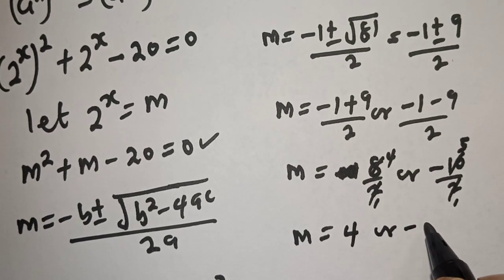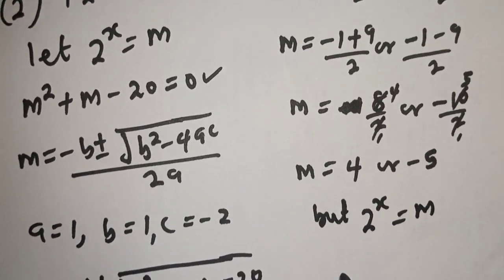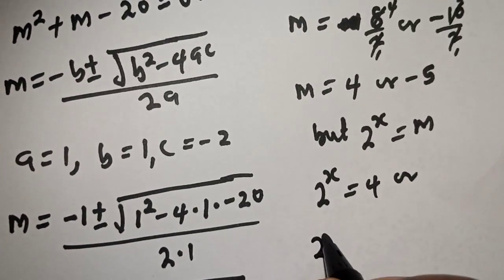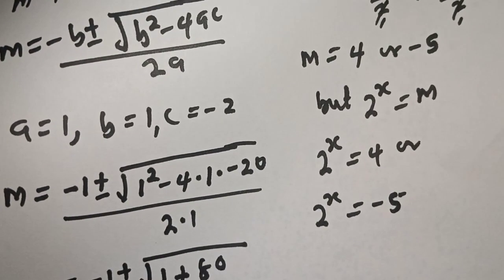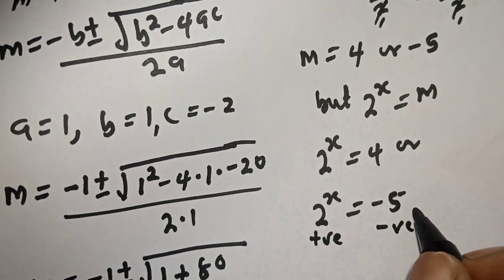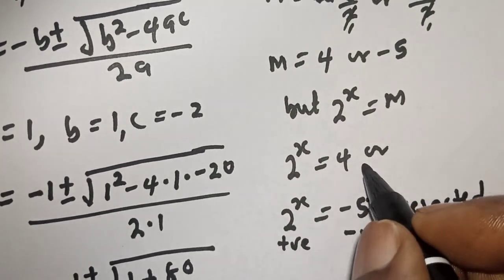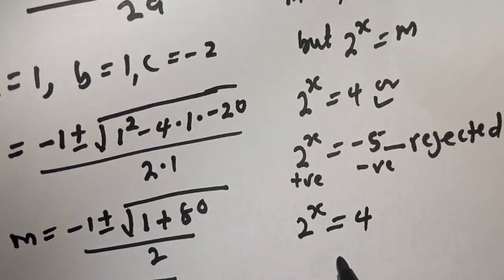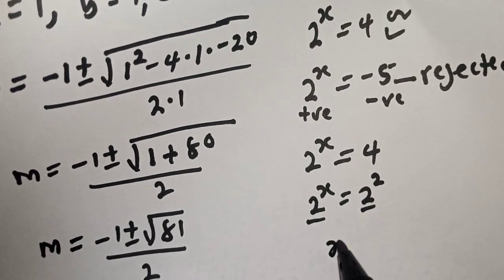So m equals 4 or minus 5. But 2 raised to power s is equal to m, so 2 raised to power s is equal to 4, or 2 raised to power s is equal to minus 5. However, 2 raised to power s cannot equal minus 5 because 2 raised to any power is positive, so that solution is rejected. The only solution is 2 raised to power s equals 4, which is 2 squared. We have the same base, therefore s is equal to 2. This is the final answer.